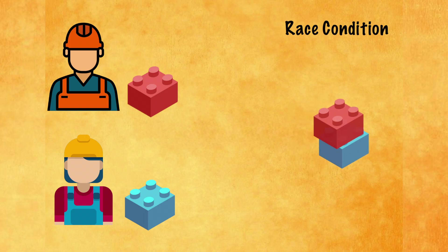This is what's known as a race condition — a situation where you don't know which process will be completed first. Now we have a great lego block example, but how does this compare back to programming?